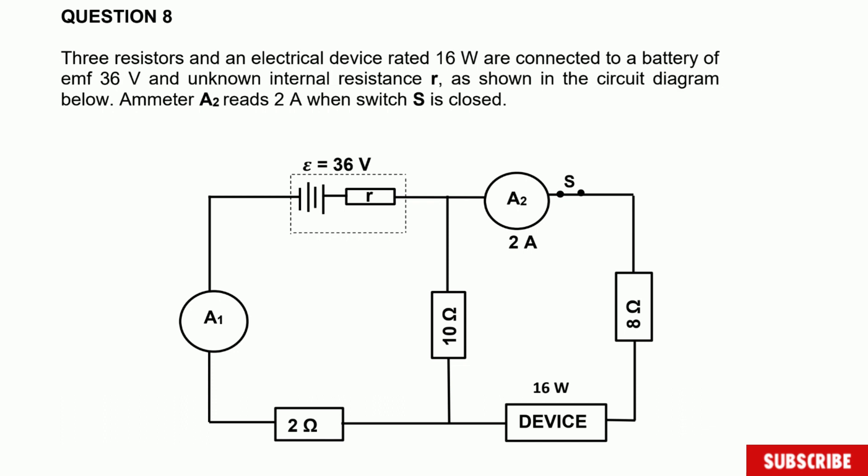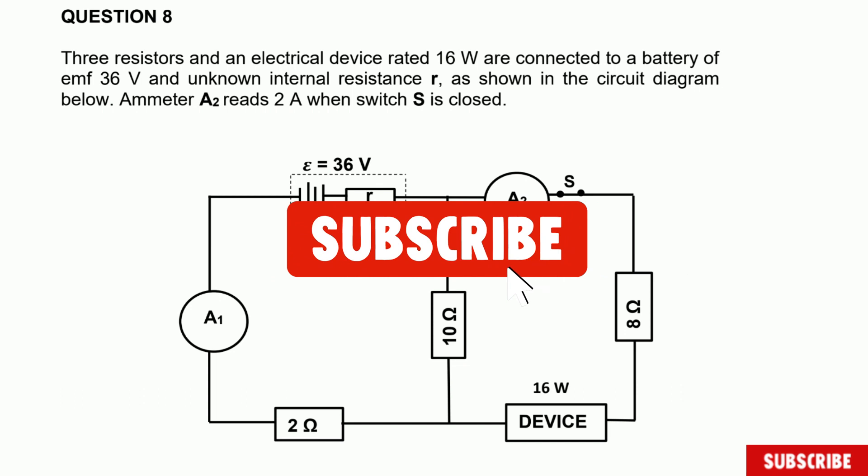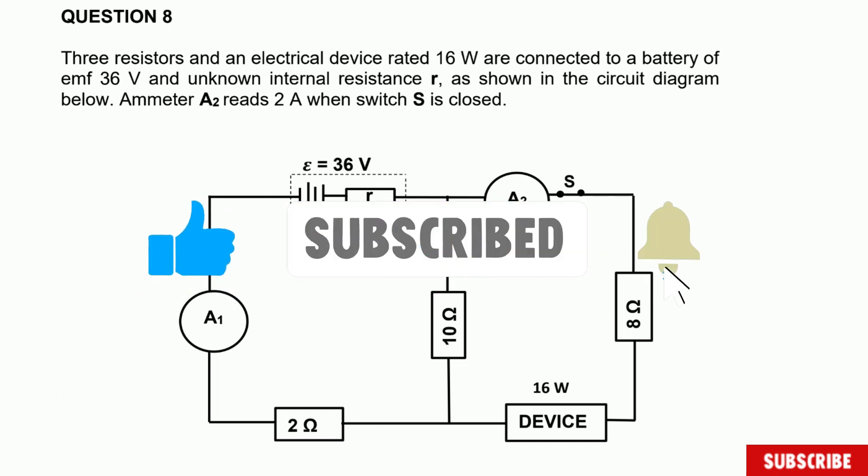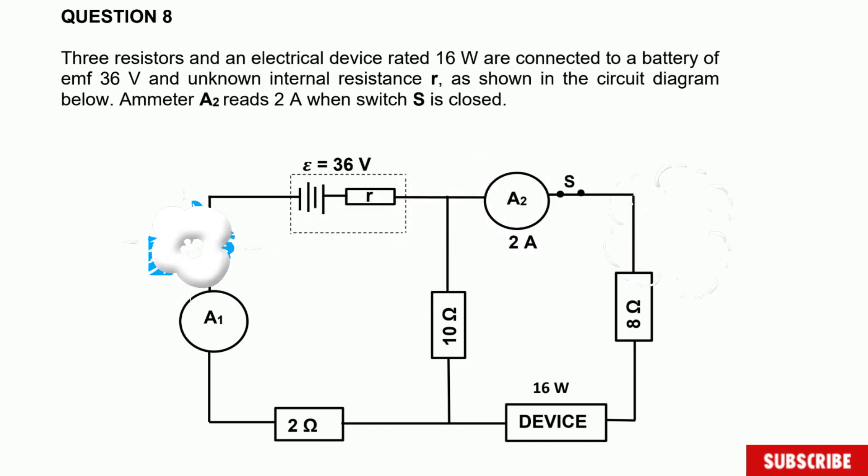But before we carry on, don't forget to subscribe to the channel and like the video so you can get all the notifications. This question says three resistors and an electrical device rated 16 watt are connected to a battery of EMF 36 volt, with an unknown internal resistance R shown in the circuit diagram below. Ammeter A2 reads 2 amperes when the switch S is closed.